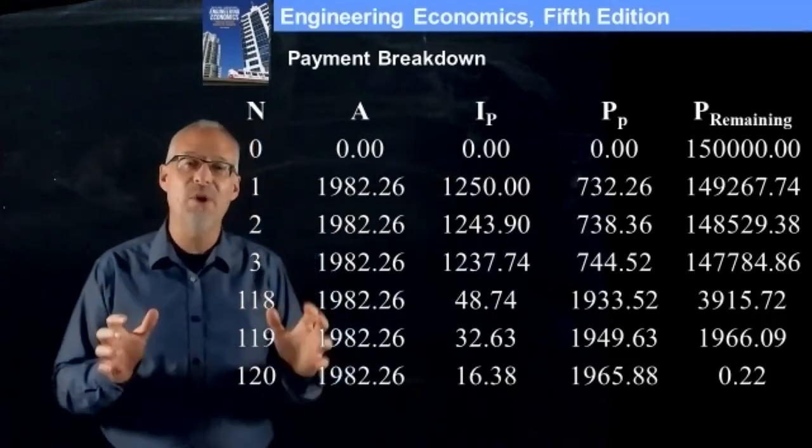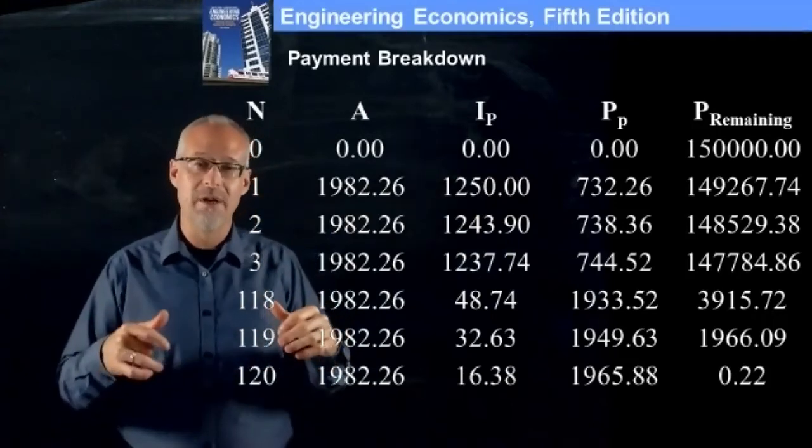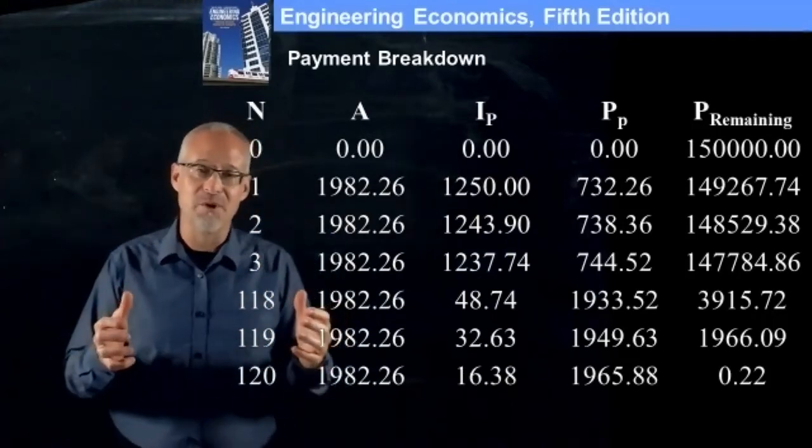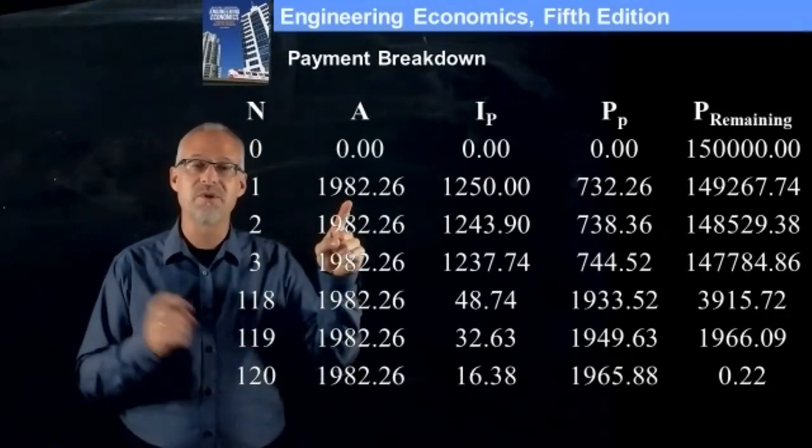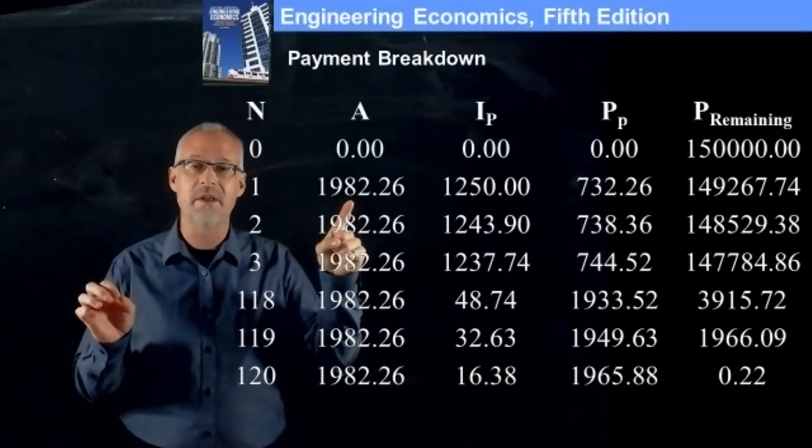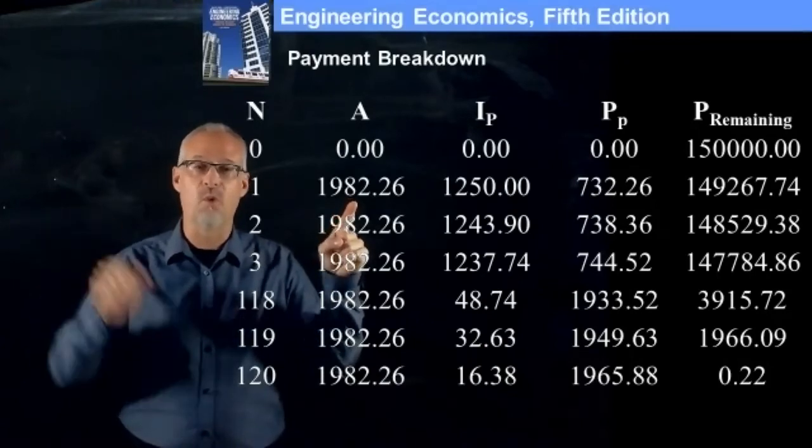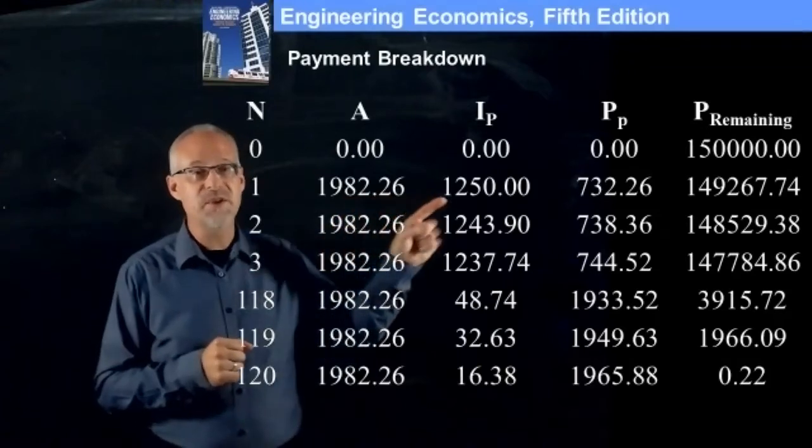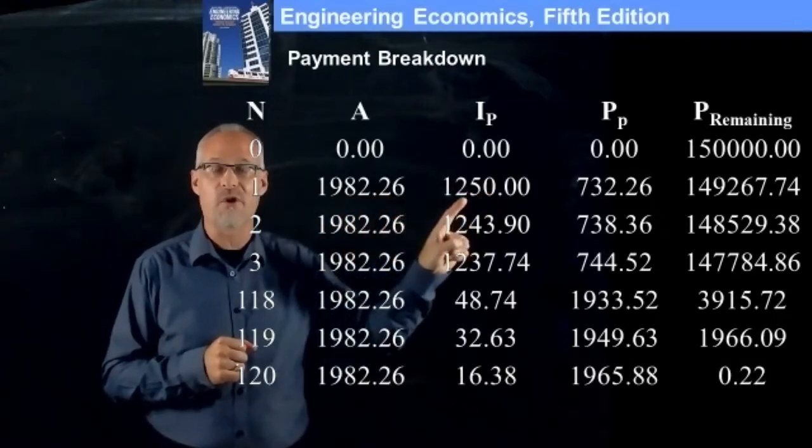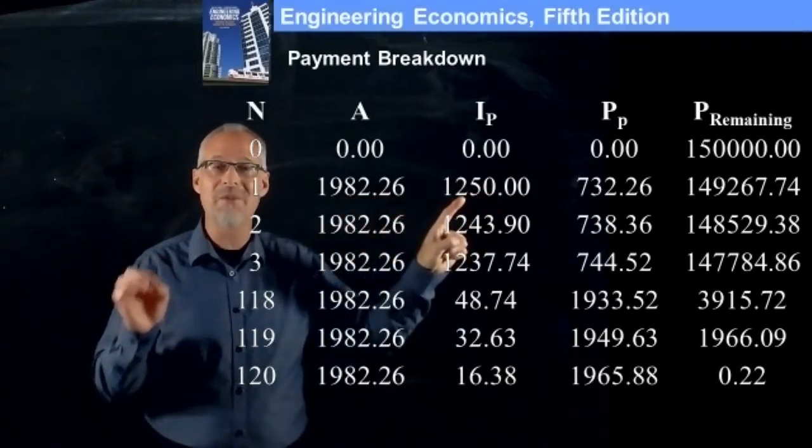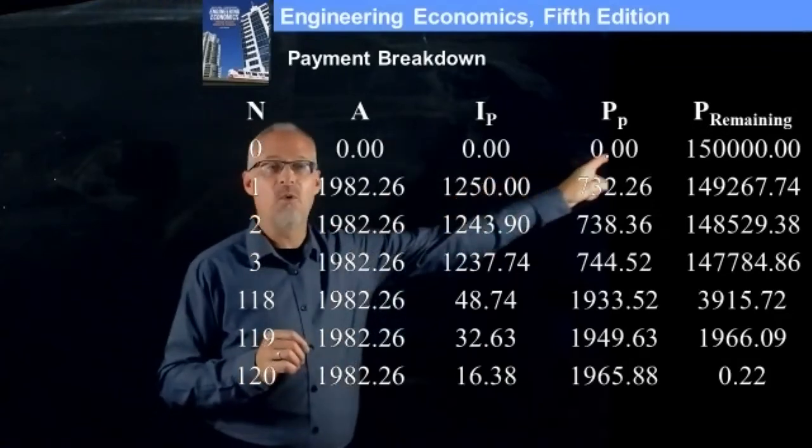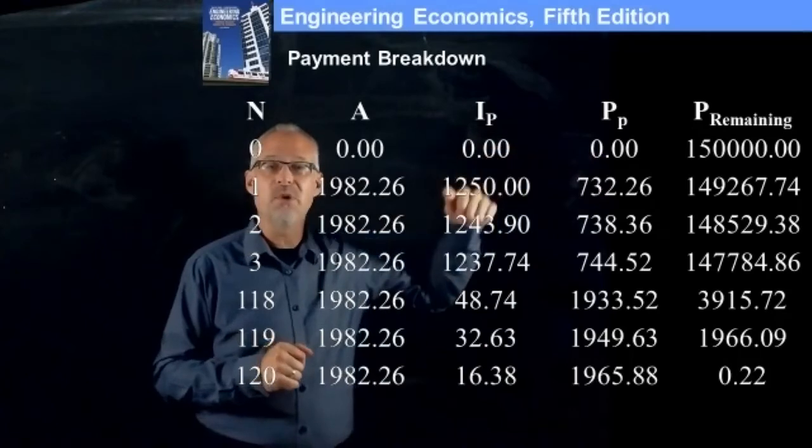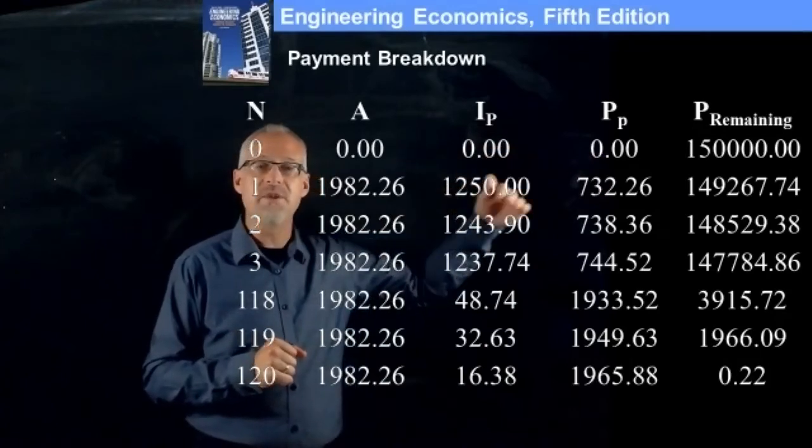If you want to make a spreadsheet, this is what I would encourage people to do to understand it. It's easy to program this. The 1982 is really just what you calculated from the time value of money from the A given P factor, from part one of this problem. This column in the spreadsheet is just a formula that is the monthly interest rate times whatever the outstanding amount was in the period previous. And you can see how we step through.